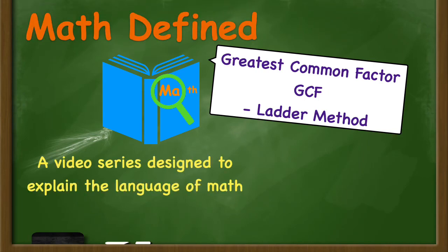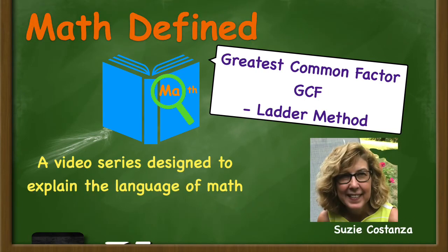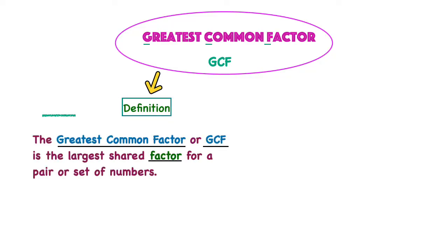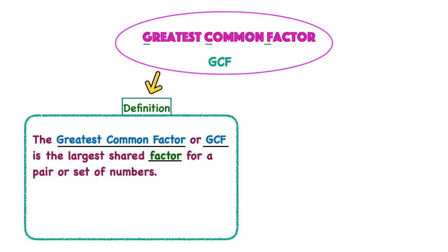Hello! Welcome to Math Defined. I'm Suzy. Today I'm going to talk about Greatest Common Factor, more commonly known as the GCF, and I'm going to be showing you the ladder method that is used to find it. The Greatest Common Factor, or GCF, is the largest shared factor for a pair or set of numbers.